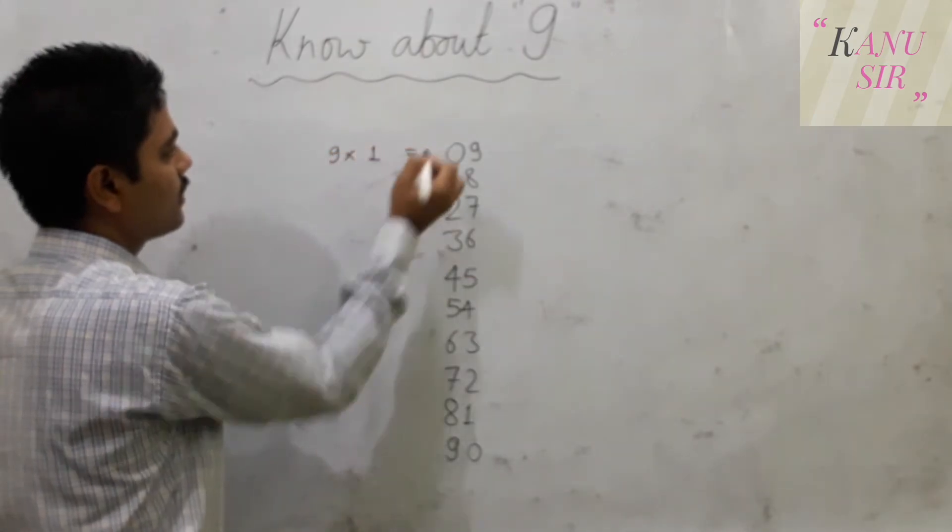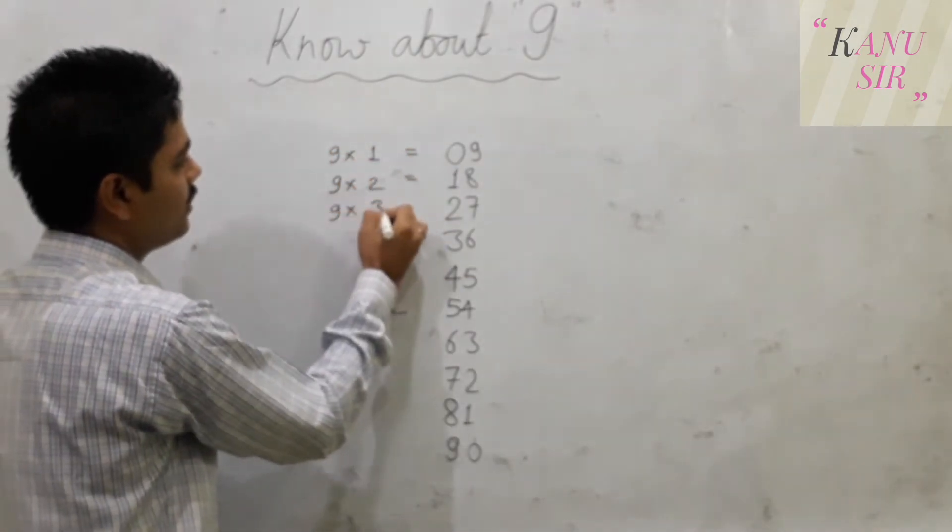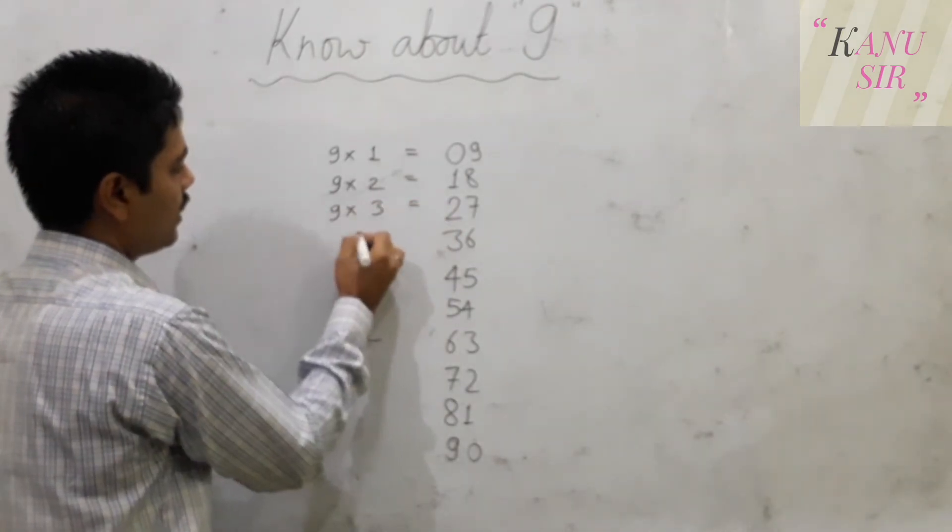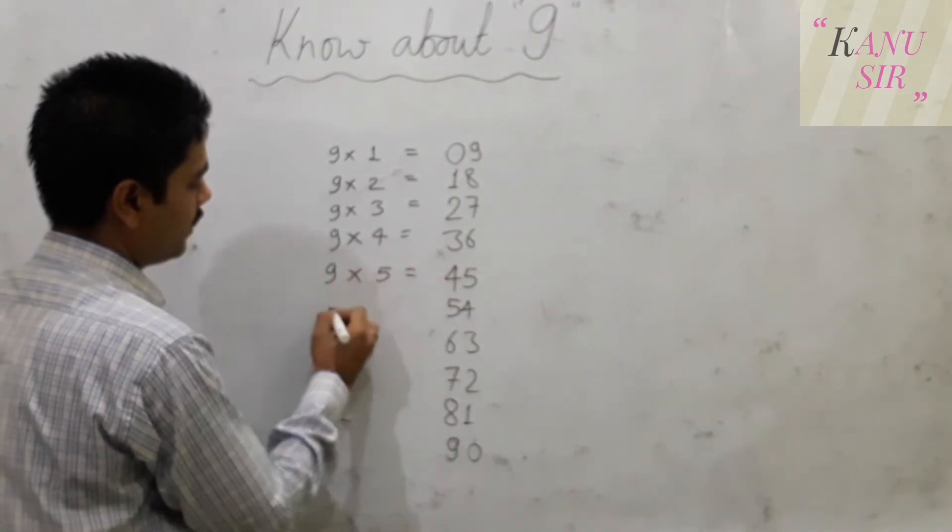9 times 1 is 9. 9 times 2 is 18. 9 times 3 is 27. 9 times 4 is 36. 9 times 5 is 45.